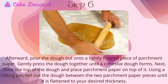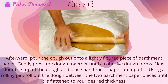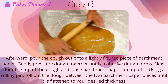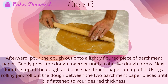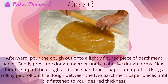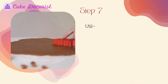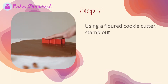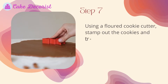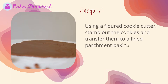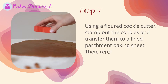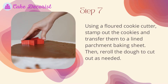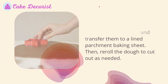Step six: flour the top of the dough and place parchment paper on top. Using a rolling pin, roll out the dough between the two parchment paper pieces until it is flattened to your desired thickness. Step seven: using a floured cookie cutter, stamp out the cookies and transfer them to a lined parchment baking sheet, then reroll the dough to cut out more as needed.